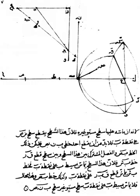Around the 1st century BC, the Vishnu Purana refers to sunlight as the seven rays of the sun. In the 5th century BC, Empedocles postulated that everything was composed of four elements: fire, air, earth, and water. He believed that Aphrodite made the human eye out of these four elements and that she lit the fire in the eye which shone out making sight possible. If this were true, one could see during the night just as well as during the day, so Empedocles postulated an interaction between rays from the eyes and rays from a source such as the sun.